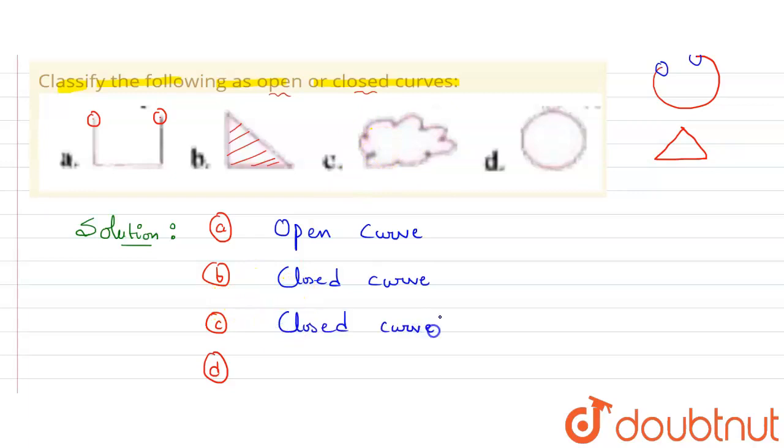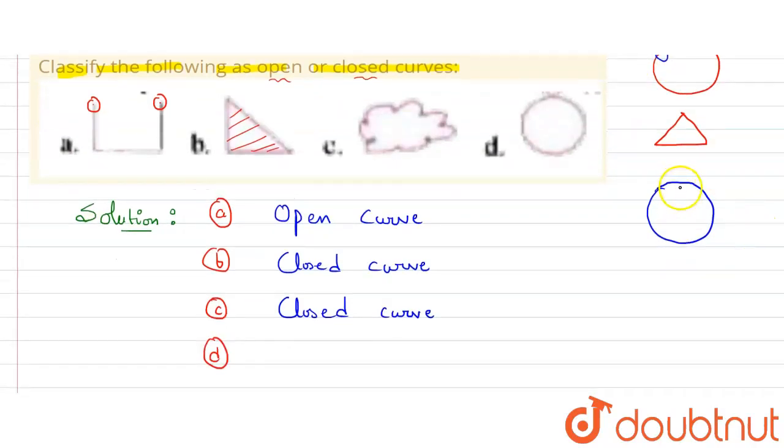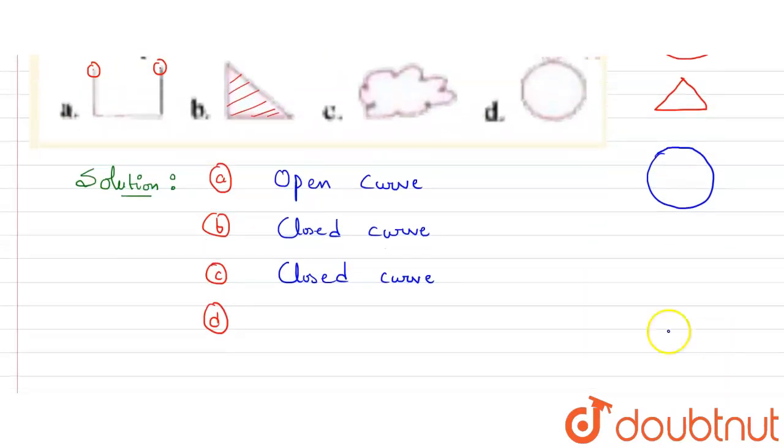Now part D. Here this is a circle. This is also end to end connected. Here we are not having even a single endpoint. Look at this example, we were having this space here and two endpoints, but here in this case of circle we are not having a single endpoint and it is end to end connected, so it is also a closed curve.